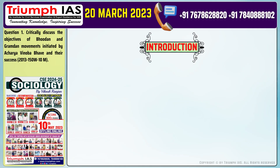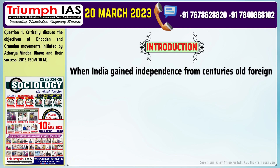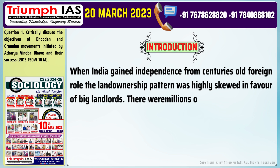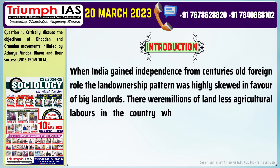Let's start with the introduction of the answer. When India gained independence from centuries-old foreign rule, the land ownership pattern was highly skewed in favor of big landlords. There were millions of landless agricultural laborers in the country who had no other source of livelihood.